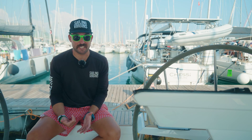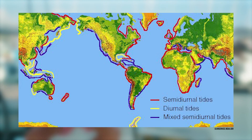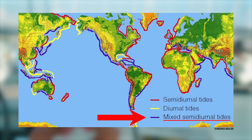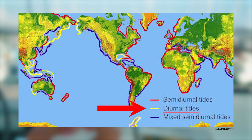We have two high tides every day in most parts of the world. We call this the semi-diurnal pattern. There are other patterns around the world — one is mixed semi-diurnal and diurnal.